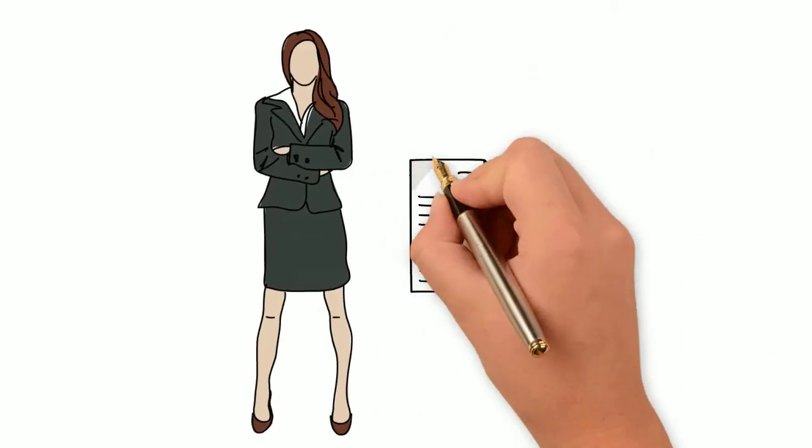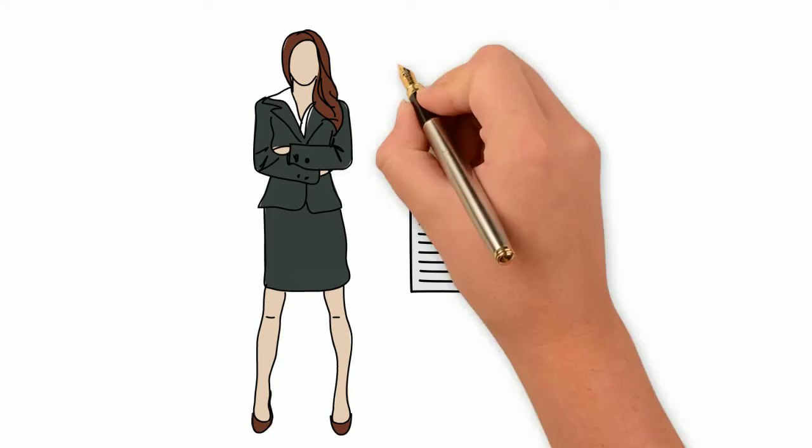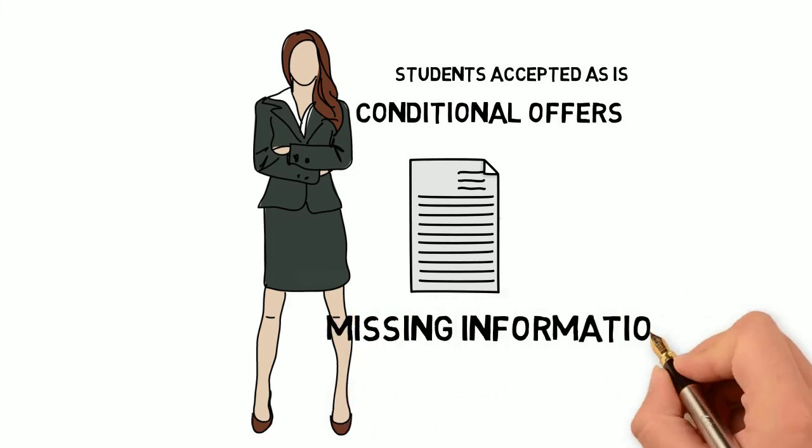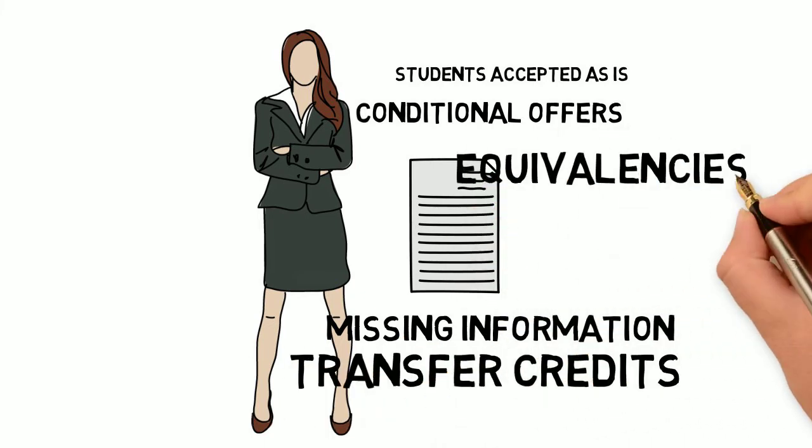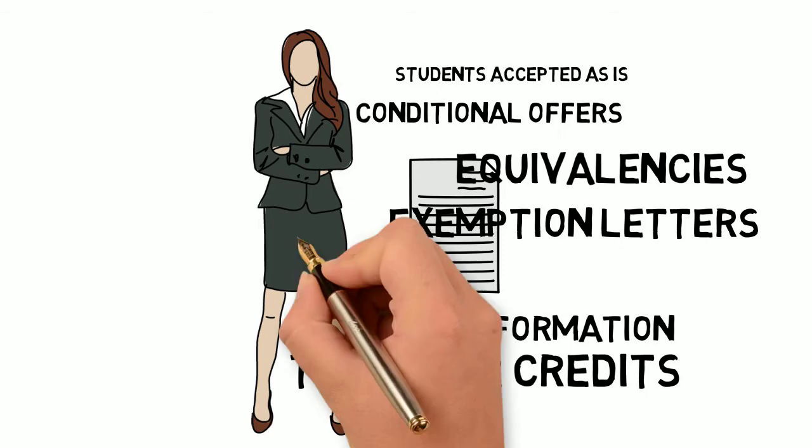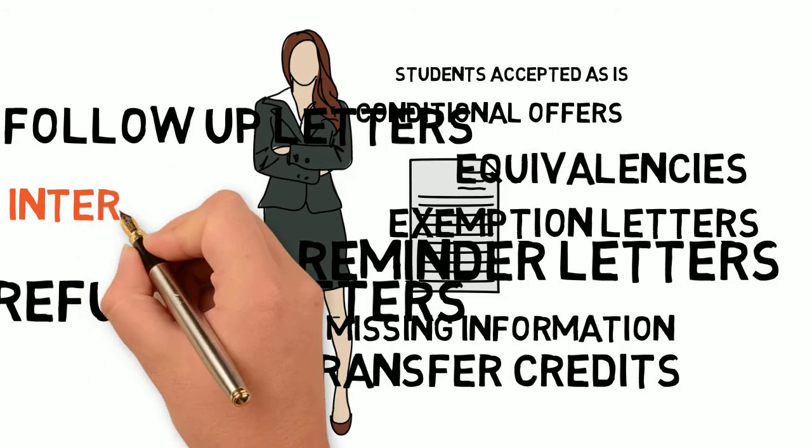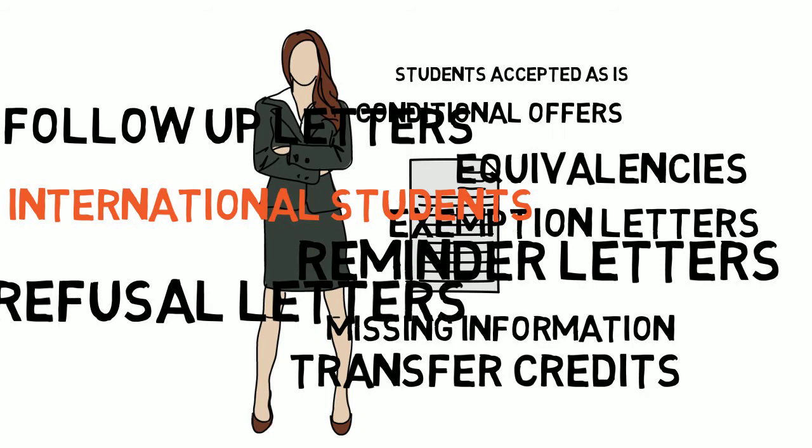Back to you. Let's assume you're sending letters to prospective students. This is a complicated procedure because there can be so many different types of letters. There are letters for students who are accepted as is, conditional offers for students who need to meet certain criteria, letters requesting missing information, letters requesting transfer credits and equivalencies, exemption letters, reminder letters, follow-up letters. Plus, there are refusal letters, too. Not to mention the special letters and procedures for international students. The list goes on and on.